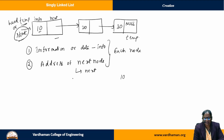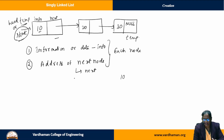A linked list is nothing but a collection of nodes. It is a linear data structure defined as a collection of nodes in which each node has two fields: one is information, and the second is the address of the next node. Now let us understand how to create nodes and how to connect this collection of nodes to make a singly linked list.